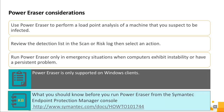Use Power Eraser to perform a load point analysis of an endpoint you suspect to be infected. Power Eraser examines load points and load point disk locations, running processes, and installed services. After running Power Eraser, review the detection list in the scan or risk log and select an action. Use Power Eraser only in emergency situations when computers exhibit instability or have a persistent problem — typically on a single computer or small group. You should not run other applications at the same time. Power Eraser is only supported on Windows clients.